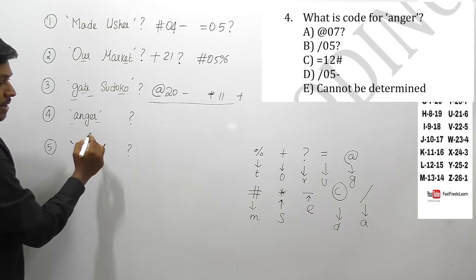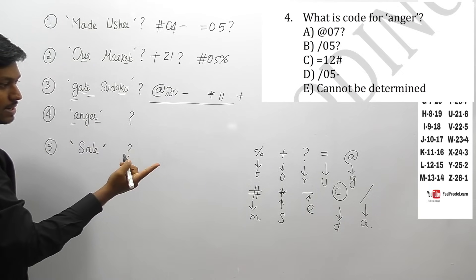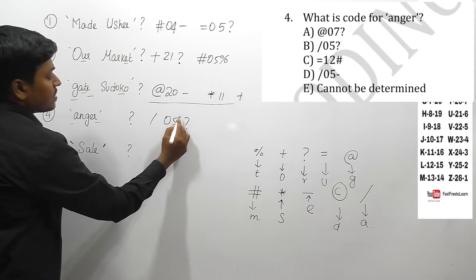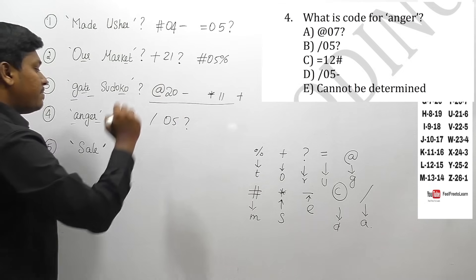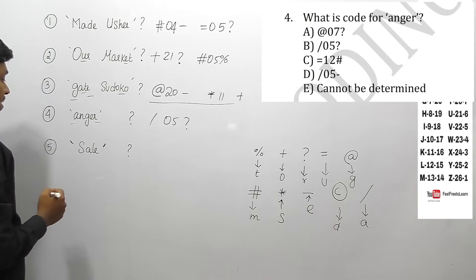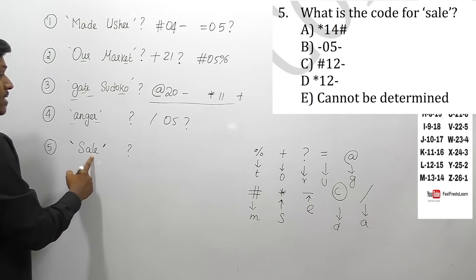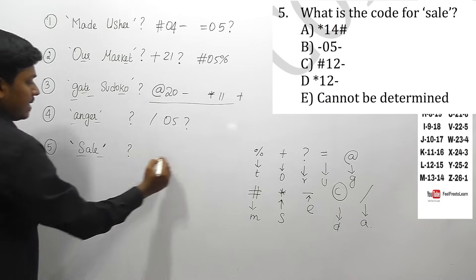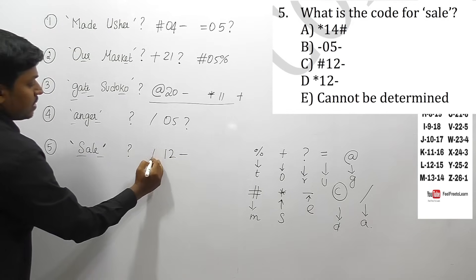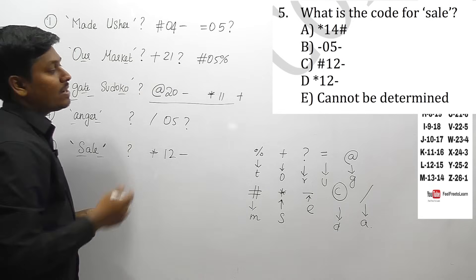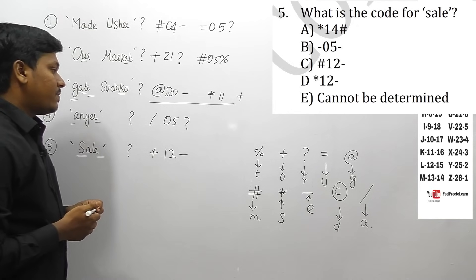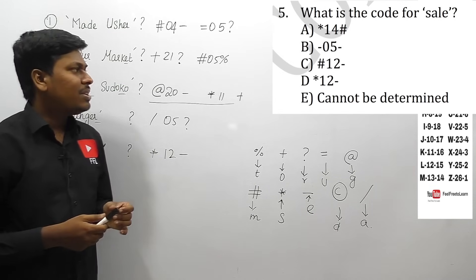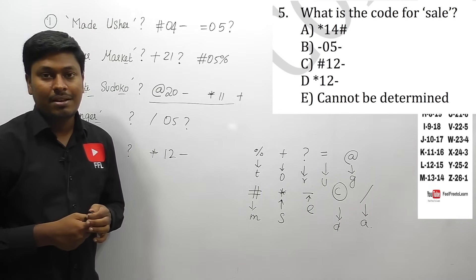Question 4: code for 'anger'. A is coded as slash, R as question mark, E is not 5, so: slash, not-5, question mark — option B is your answer. Question 5: code for 'sale'. L = 12 alphabetically, S is coded as star, E as minus. So the code is star-12-minus — option D is your answer. To solve these types of questions, you should practice a minimum of 50 to 60 questions so you can easily find the logic they are using in this pattern.